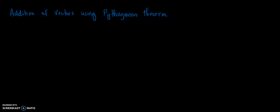The angle between the two vectors must be 90 degrees. For example, we have vector A equal to 3 centimeters with a direction of 0 degrees, or going east. And another vector, vector B, equal to 4 centimeters with an angle of 90 degrees. The angle between the two vectors should be 90 degrees.